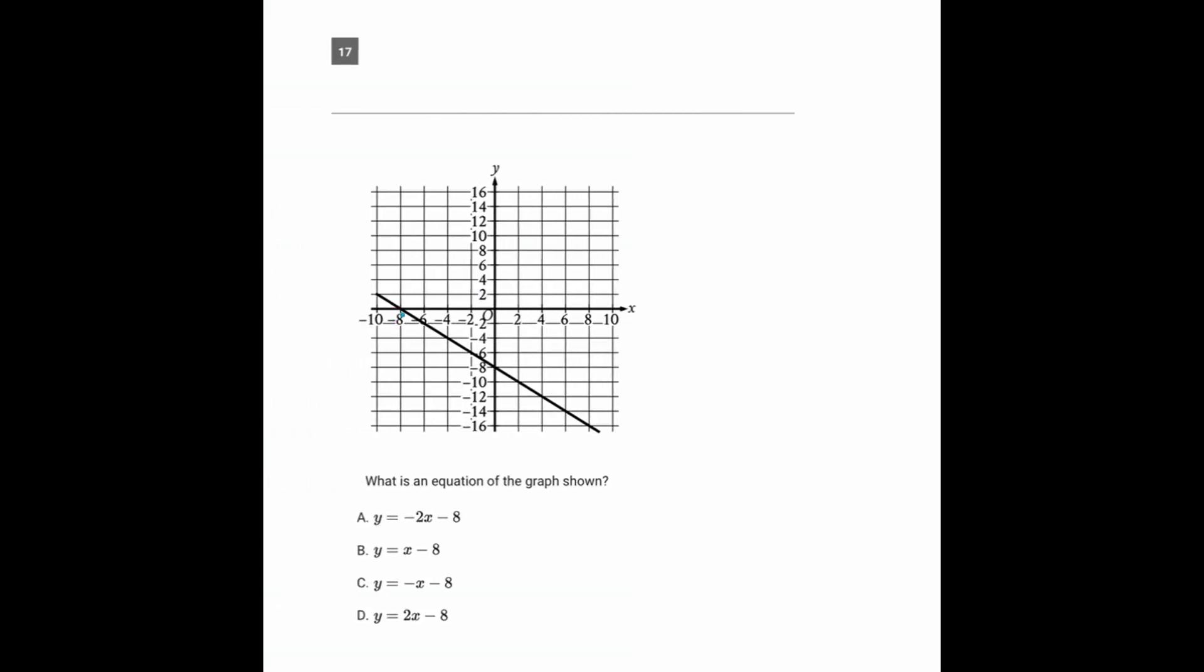So rise over run as you go from left to right. So here, let's do it from this point to this point. Our rise is negative 8 and our run is positive 8. So the slope, rise over run, is negative 8 over positive 8, which is just negative 1.